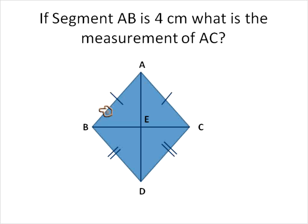Well, if we know that AB is 4 centimeters, and we can see by this line that they are congruent, then AC would also be 4 centimeters. If AB is 4 centimeters, then AC would be 4 centimeters.